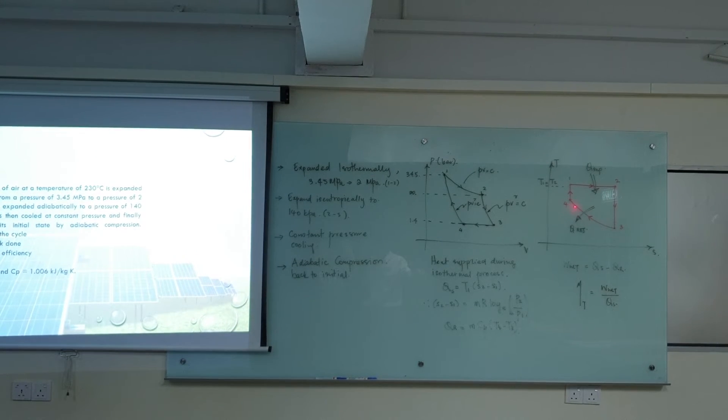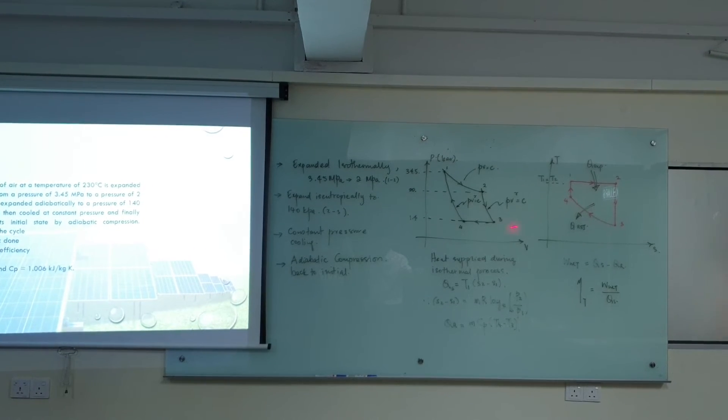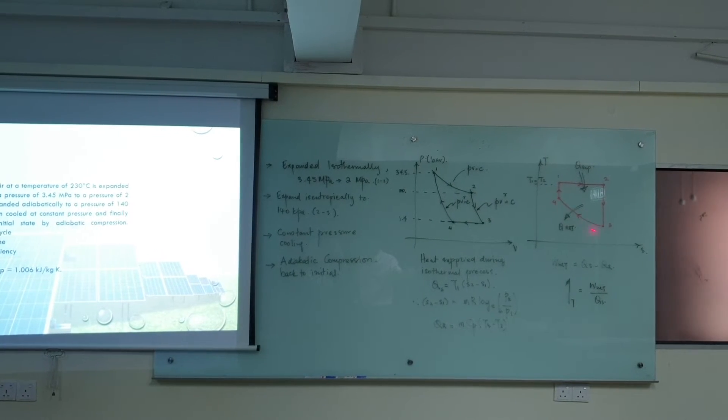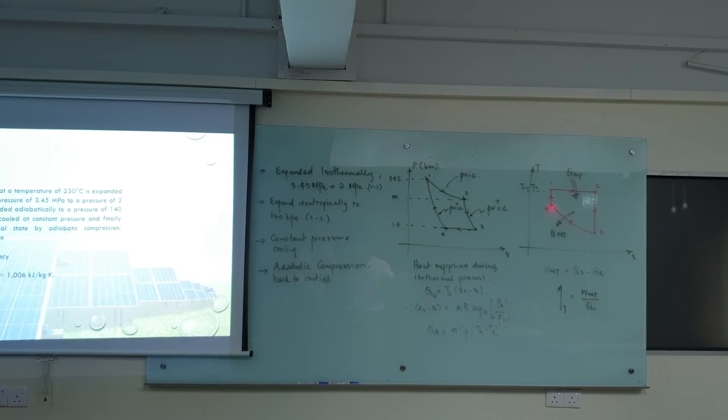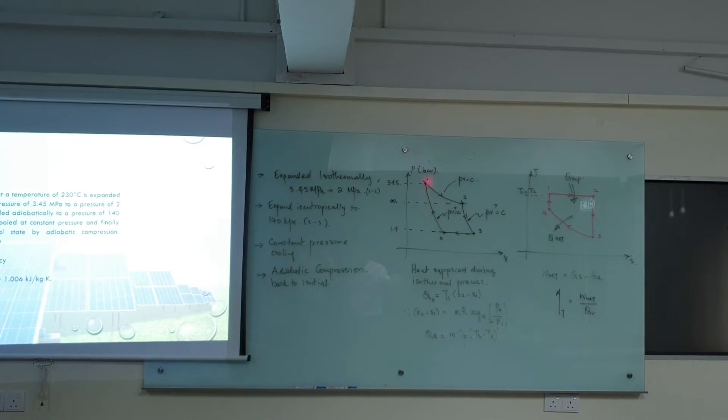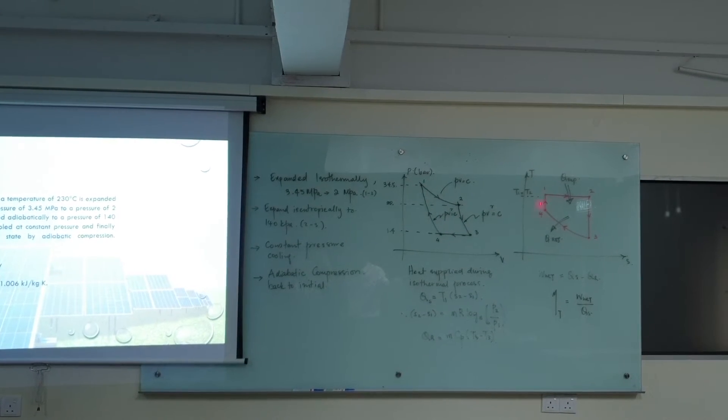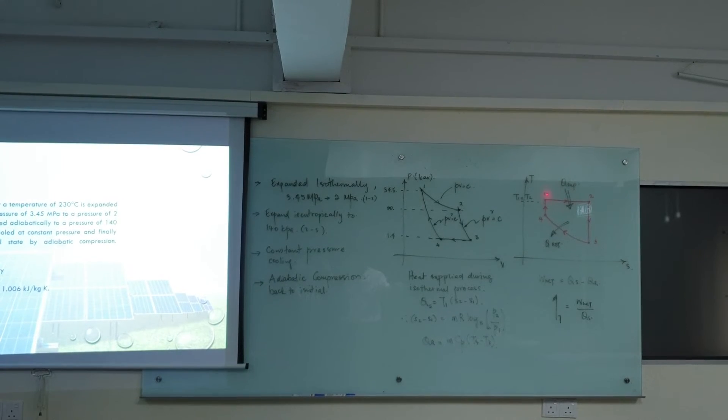Then 3 to 4 is a constant pressure process. So on the TS diagram, it is shown on a constant pressure line. Then at 0.4 to 1, again, it goes isentropically back to 0.1. So restore back to 0.1.